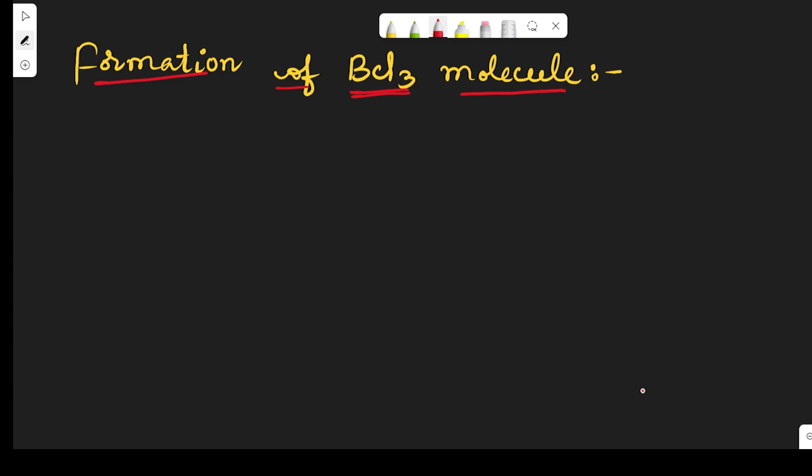Hello students, welcome back. In today's class we are going to discuss the formation of BCl3 molecule. BCl3 means boron trichloride. What is the structure of BCl3 and which type of hybridization takes place? Let us see. In boron trichloride, boron is the central atom and it undergoes sp2 hybridization.